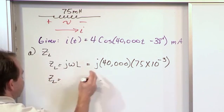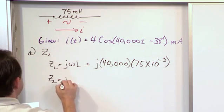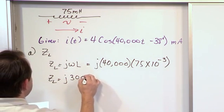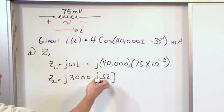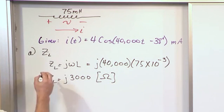So Z sub L then, when you multiply these two things together, you're just going to get j times 3,000, and the units of impedance are just like the units of resistance. That's easy to remember. You just use ohms. So this is the answer.